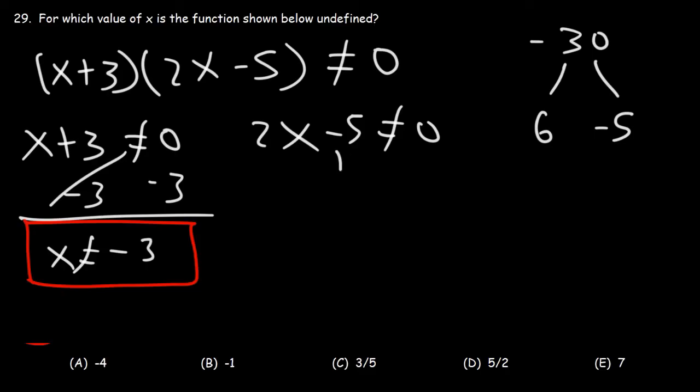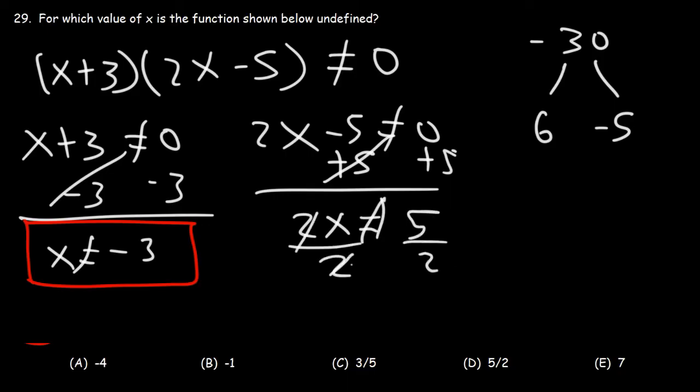For the second one, we need to add 5 to both sides. And then we need to divide by 2. So x cannot be 5 over 2. So these are the values where the function is undefined.